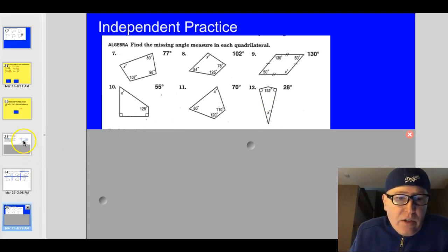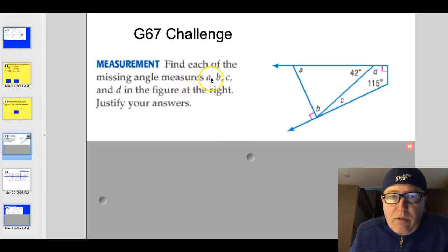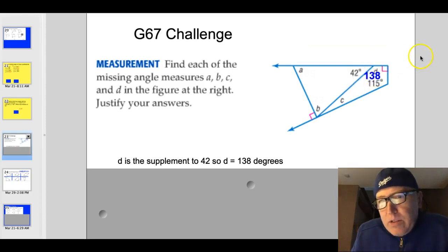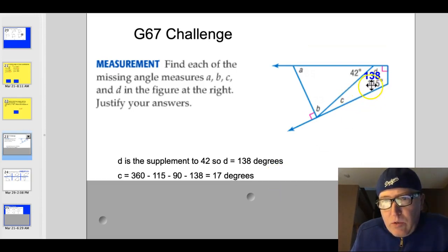So if you did the G67 challenge, find each of the missing angles for measures A, B, C, and D. Initially, this looks kind of complicated, but if you think about it, this here, we can probably figure this out pretty easily because if this is a 42 degree angle right here, and this is 180 degrees, we can figure out what D is. So that's the first thing I did. D is the supplement to 42. So D is 138 degrees. So now you've got one, two, three measurements out of four in this quadrilateral right here. So if you take 360 and you subtract 115, you subtract 138, and you subtract this 90 degree angle, you'll have 17 degrees. So C is worth 17 degrees.